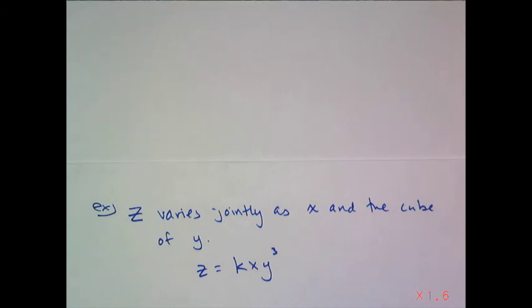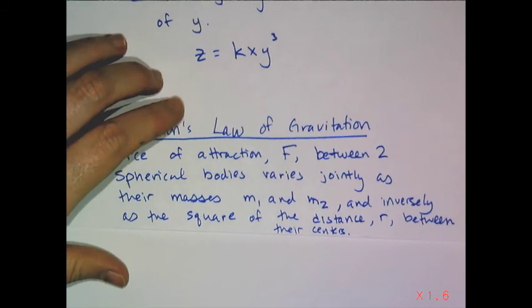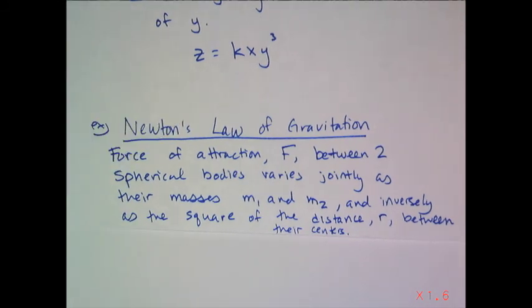The super famous example is Newton's law of gravitation, written in the language of variation. If you look up Newton's law of gravitation now, you'll see a formula for it. But before he just had his formula, he also had to write this out in sentence format for people who didn't understand the notation he was using. The force of attraction f between two spherical bodies varies jointly as their masses m1 and m2 and inversely as the square of the distance r between them. This uses direct joint and inverse variation to give you an equation.